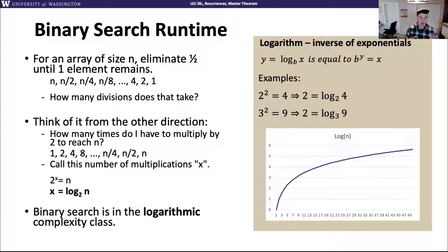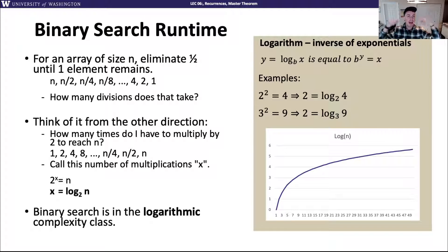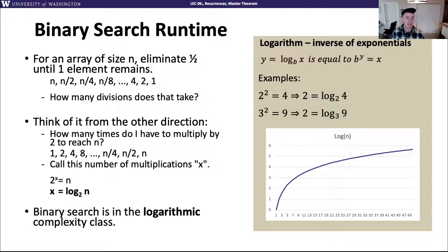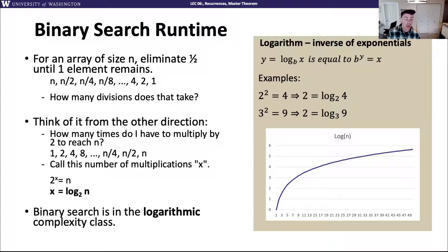As a reminder, logarithms are the inverse of exponentials. When you say y = log_b(x), that's saying b^y = x — you're finding how many times you have to multiply b by itself to get to x. For example, since 2 squared is 4, log base 2 of 4 is 2. And log base 3 of 9 is 2 because 3 squared is 9. This log function grows really slowly as n gets larger, which is one of the really nice properties of log. Logarithmic algorithms are fantastic because they grow so slowly.